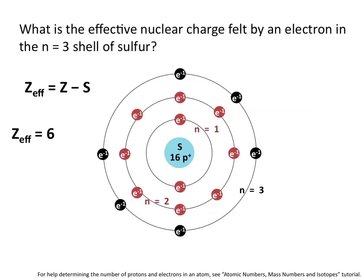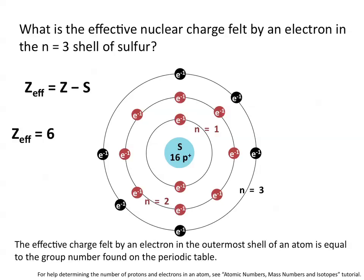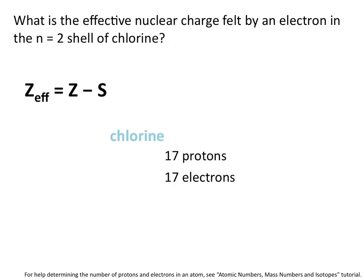What is the effective nuclear charge felt by an electron in the n equals 2 shell of chlorine? A neutral chlorine atom has 17 protons and 17 electrons. The n equals 1 shell can hold 2 electrons and the n equals 2 shell can hold 8 electrons, leaving 7 electrons — that is, 17 minus 8 minus 2 — in the n equals 3 shell, even though the n equals 3 shell could hold 14 total.